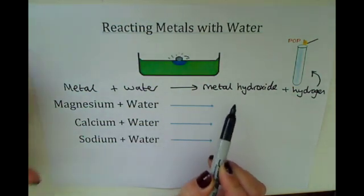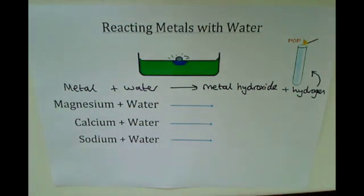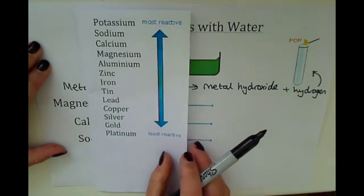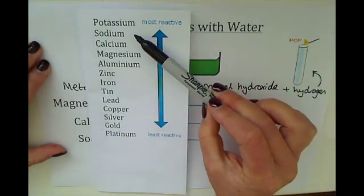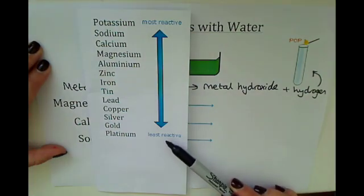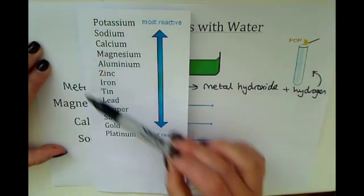Now in this case, the reactivity of the metals is quite important. This shows the reactivity series of metals, starting from the most reactive, potassium, down to the least reactive, platinum. Some of these metals react with water and others don't.